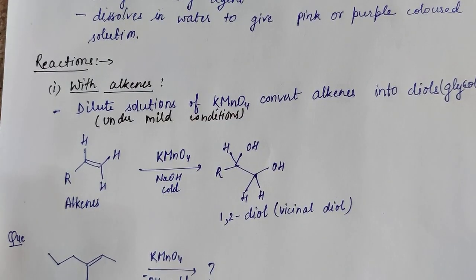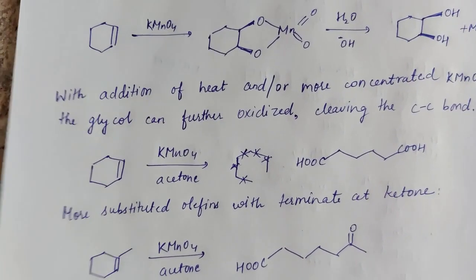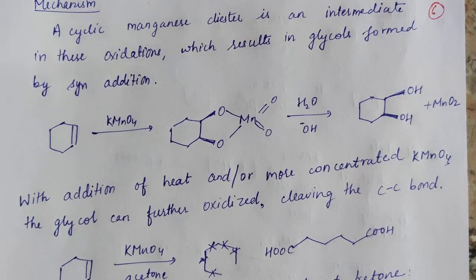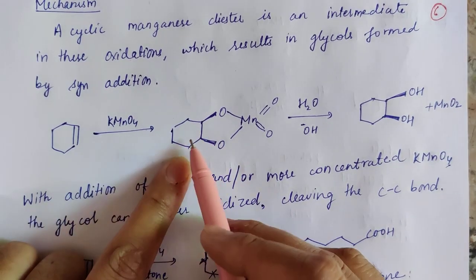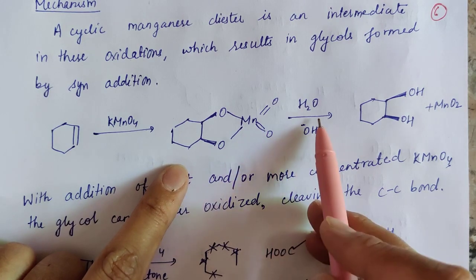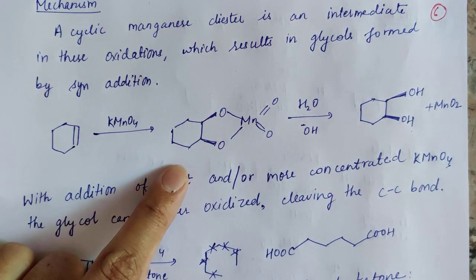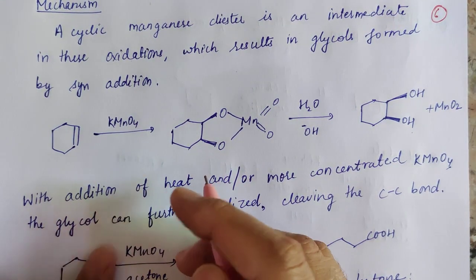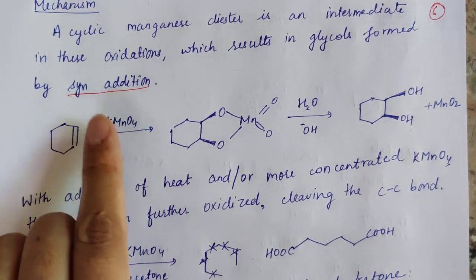This reaction is given for you to predict the product. Looking at the mechanism — how glycol, or 1,2-diol, or vicinal diol is prepared — the alkene reacted with KMnO4 forms a cyclic adduct similar to what we saw previously in osmium tetraoxide. When treated with water, the manganese leaves as MnO2 and we get the 1,2-diol. Here also syn addition is taking place, just as in osmium tetraoxide — we are getting glycol by syn addition.